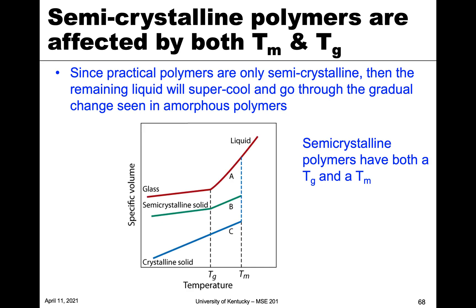A semicrystalline polymer is going to have both transitions. For the amorphous case (A), nothing happens at the melting temperature but we see a step change at Tg. For the fully crystalline case (C), we see a big step change at Tm and it's not affected by Tg. For semicrystalline (B), it follows the liquid curve and then shows a step change at Tm — but not as drastic — because we still have amorphous material, and then it also goes through a transition at Tg. So semicrystalline polymers are affected by both Tm and Tg.